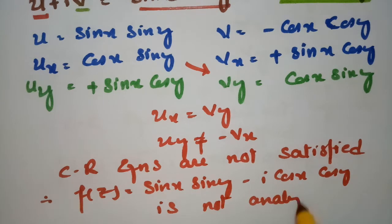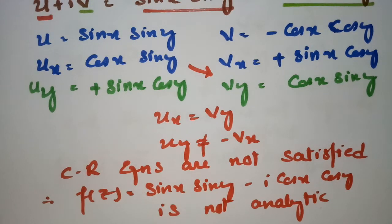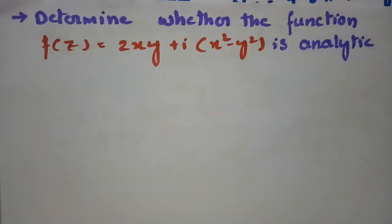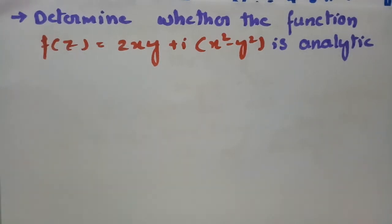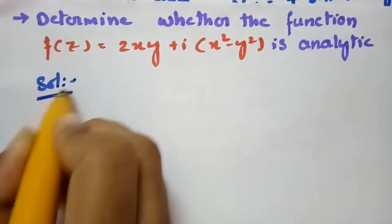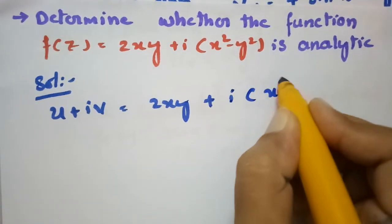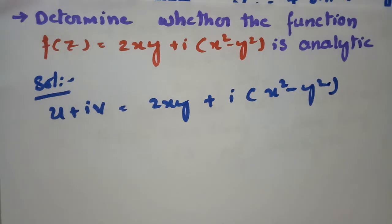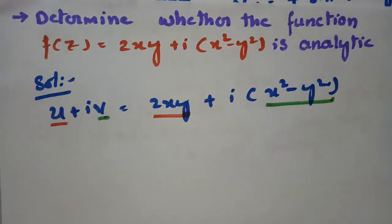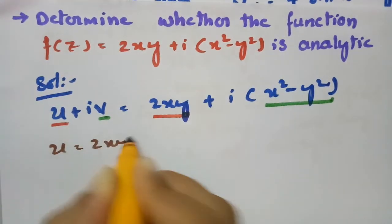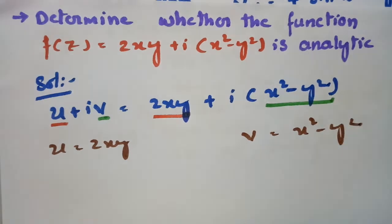The next function is f(z) = 2xy − i(x² − y²). Comparing with u + iv, where u + iv = 2xy + i(x² − y²) — wait, the real part u = 2xy and the imaginary part v = x² − y².